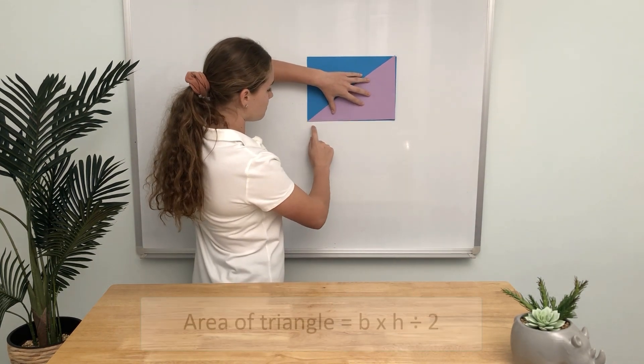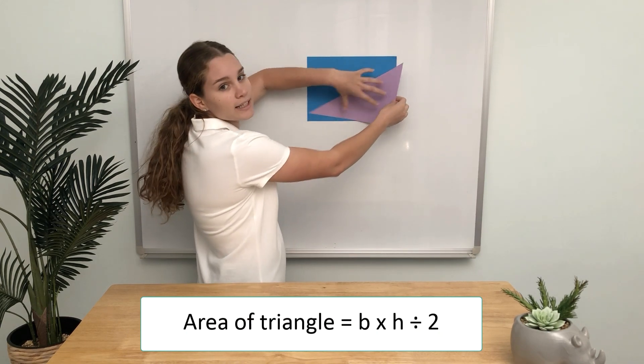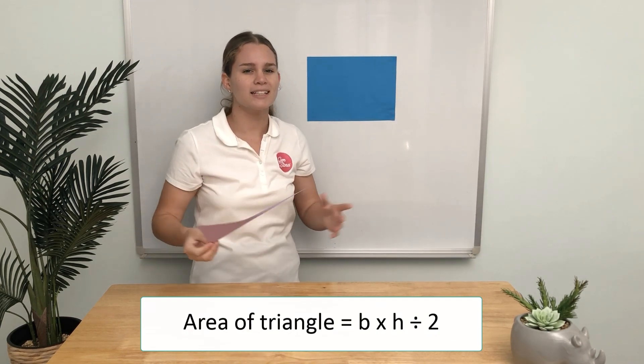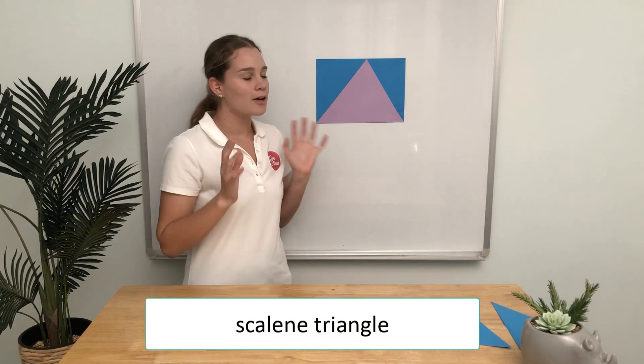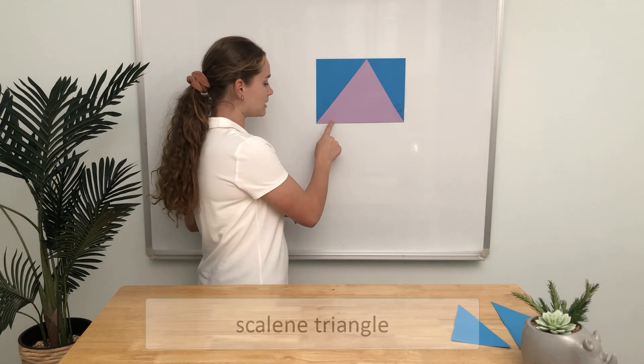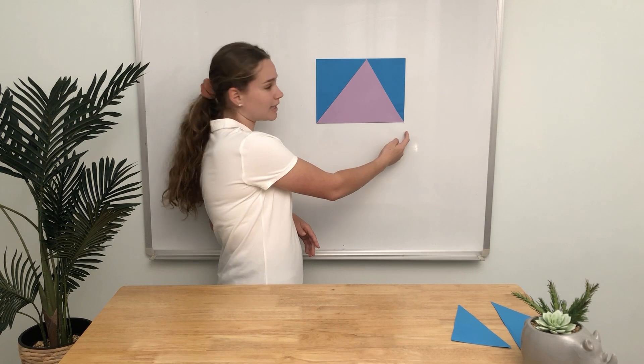This time we have a different triangle, but it's still the same. The base of the triangle is the same length as the rectangle.